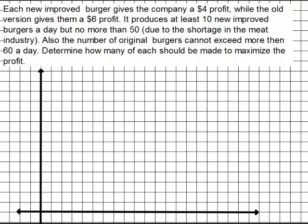Our next problem is closer to what you might actually deal with in a real linear programming problem. It reads: each new improved burger gives the company a $4 profit, while the old version gives them a $6 profit. It produces at least 10 new improved burgers a day, but no more than 50 due to a shortage in the meat industry. Also, the number of original burgers cannot exceed 60 per day. Determine how many of each should be made to maximize the profit. Unlike the last problem, we have to write the linear inequalities ourselves.